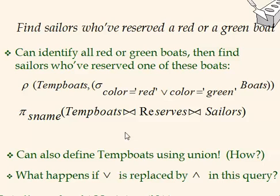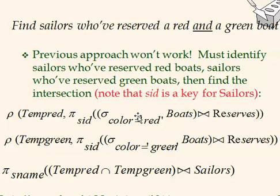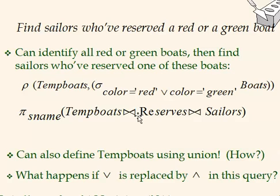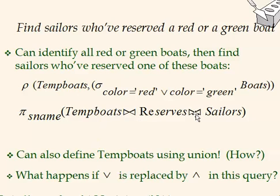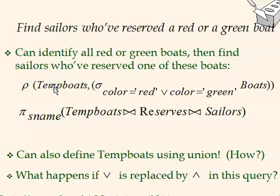For sailors who reserved a red or green boat, we use the OR operator in the selection condition. Alternatively, we can split this into two separate selections — one for red boats stored as T1, and one for green boats stored as T2 — then take the union of T1 and T2 to get all relevant boats before joining with reserves.